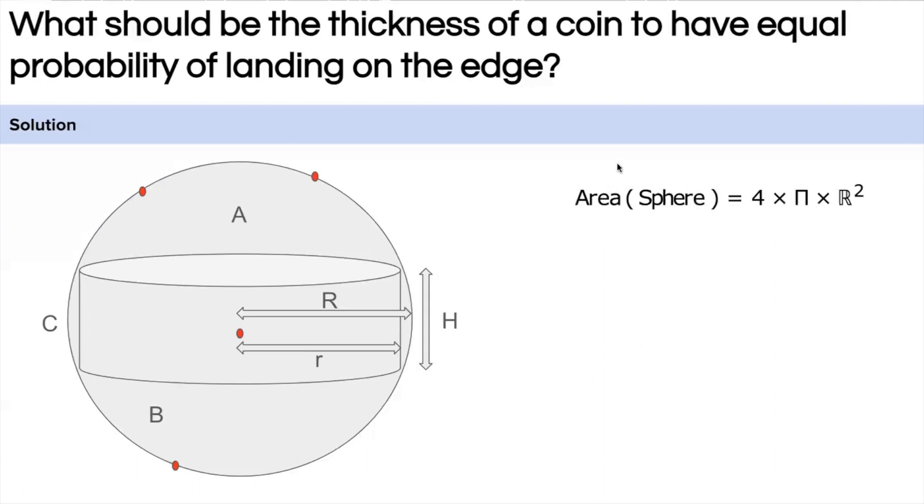So area of sphere is 4 π R², right? Here is the capital R. So area of C should be one third of area of the sphere, because all the three have equal areas. And area of C equal to 2 π R H. This is the curved surface area, and we have it equal to 4 by 3 into π R², because it is one third of the area of sphere. Here you will get a relation between capital R and H.